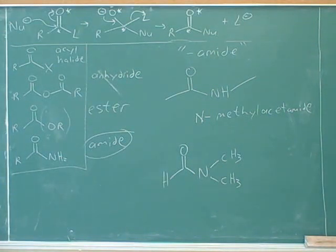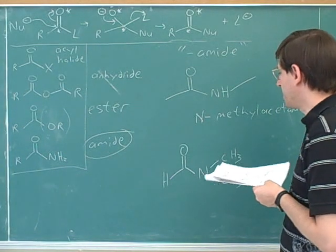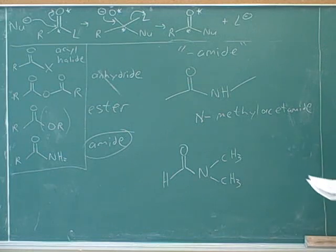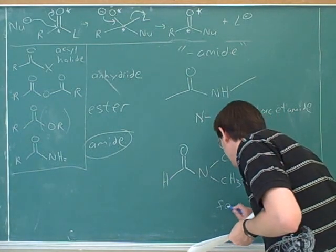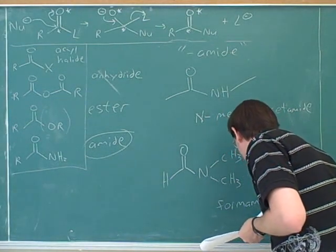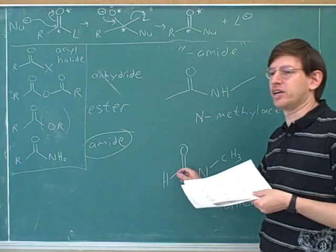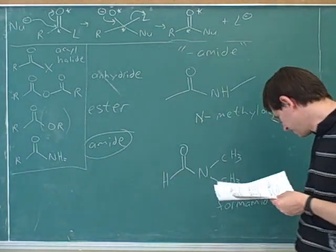This one's a little trickier, a little bit different. Let's start by naming the main chain here, what would be the name of the main chain? Acetamide. How many carbons are in the main chain? I'm sorry, formamide. Formamide, that's right. It's actually only one carbon, just the carbonyl carbon on the main chain, so that would be formamide.